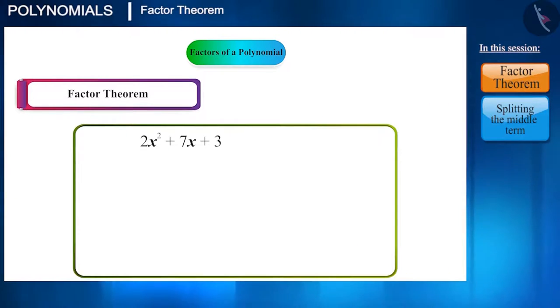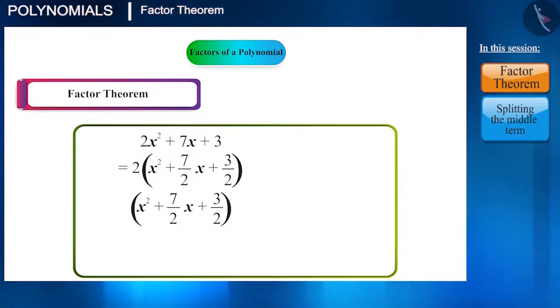First, let's see the Factorization method. The polynomial is 2x² + 7x + 3. To solve using this method, the coefficient of x² has to be 1. So, we can take 2 common out of it and write it like this: 2(x² + 7/2x + 3/2). Now, if we write x² + 7/2x + 3/2 equal to P(x), then this will become 2P(x).